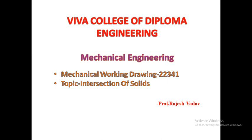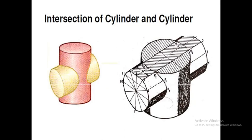We will be solving problems based on the topic intersection of solids from chapter number 2. The problem consists of intersection of cylinder and cylinder. You can see in the figure that we have two cylinders: one vertical cylinder in pink color and a second horizontal cylinder in yellow color. Both cylinders intersect each other such that their axes are perpendicular to each other. To draw the curves of intersection, we first have to mark the points of intersection, such as P2, P3, P4, etc.